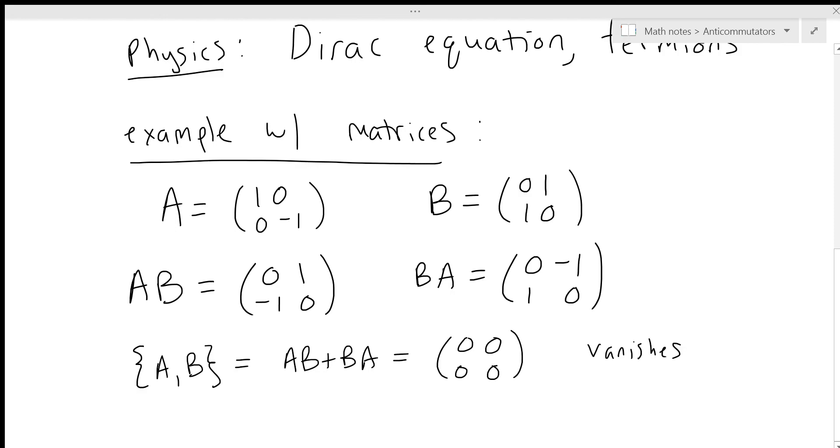It's quite interesting that we can add two matrix products that are not themselves zero but end up with zero. That's an interesting example of an anticommutator, and that's the end of this lesson.